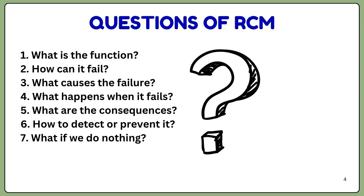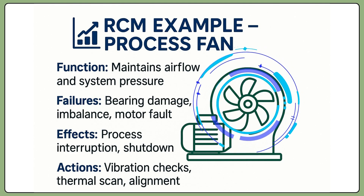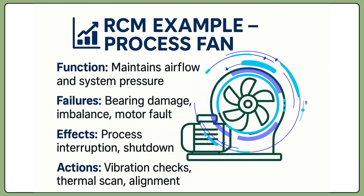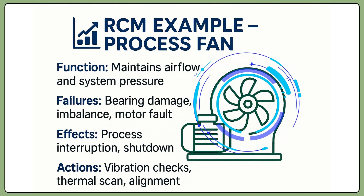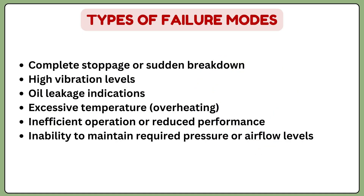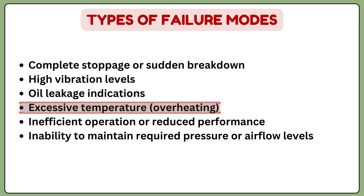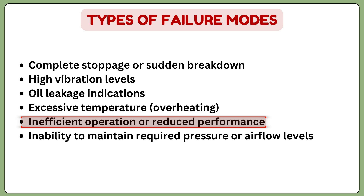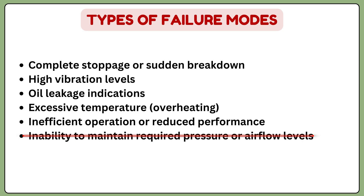Let's go through a real example using a process fan. Starting with the first question — the function: the process fan supplies hot gases from one part of equipment to another. For the second question — failure modes — either the fan will completely stop or go to breakdown, it will start to vibrate, there may be oil leakage, high temperature, or the fan will run inefficiently with pressure or flow not meeting the required benchmark.